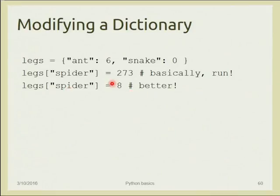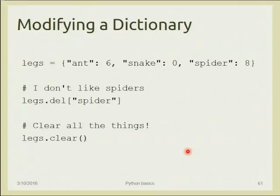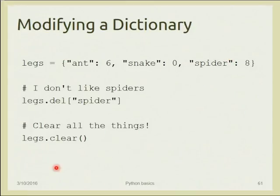Keys are immutable, but values can be changed. To change a value, use the same assignment syntax: 'legs["spider"] = 8' updates the spider's leg count to eight. To remove a key-value pair from a dictionary, use the 'del' statement: 'del legs["spider"]' deletes both the key and its value. To empty an entire dictionary, use the 'clear()' method.